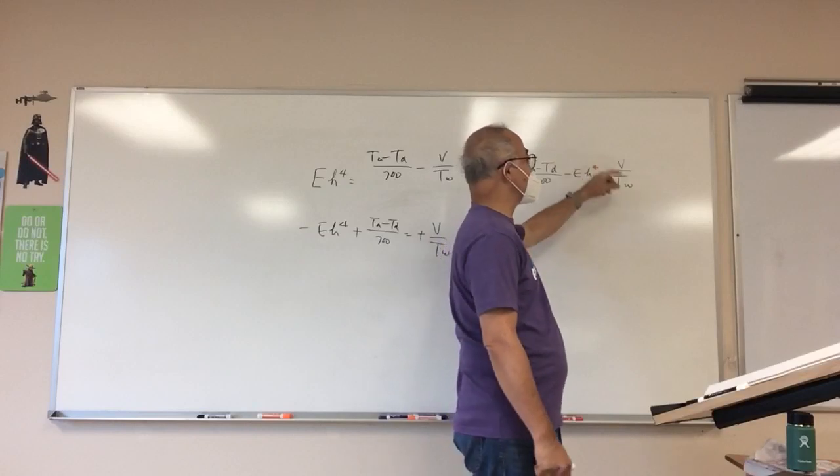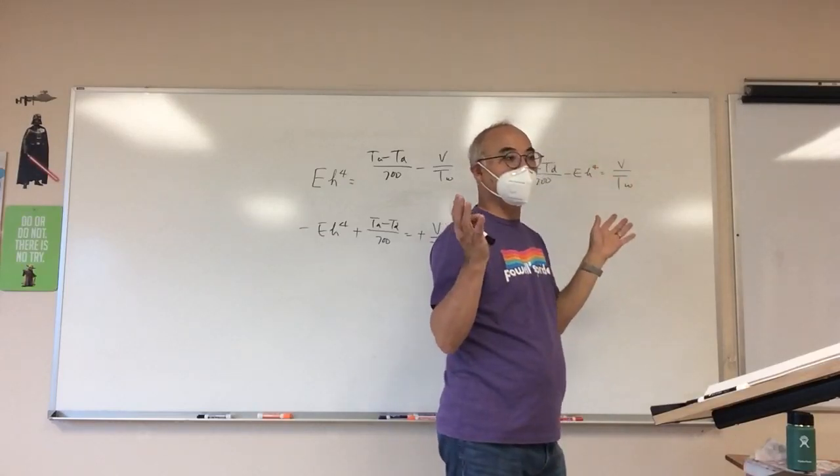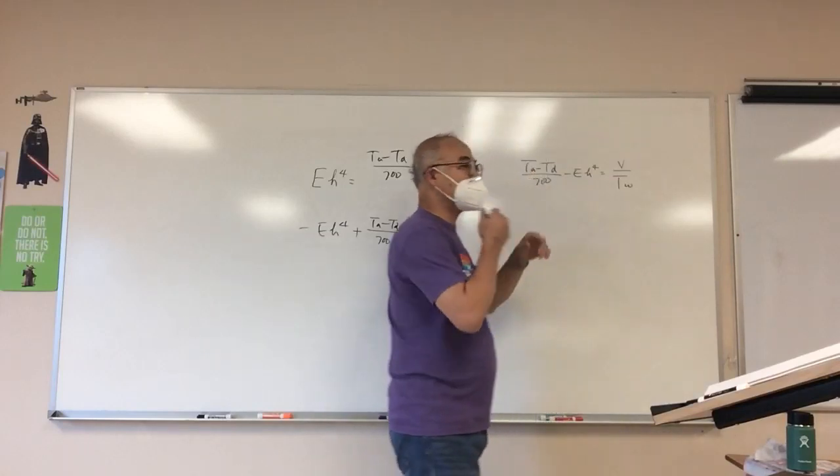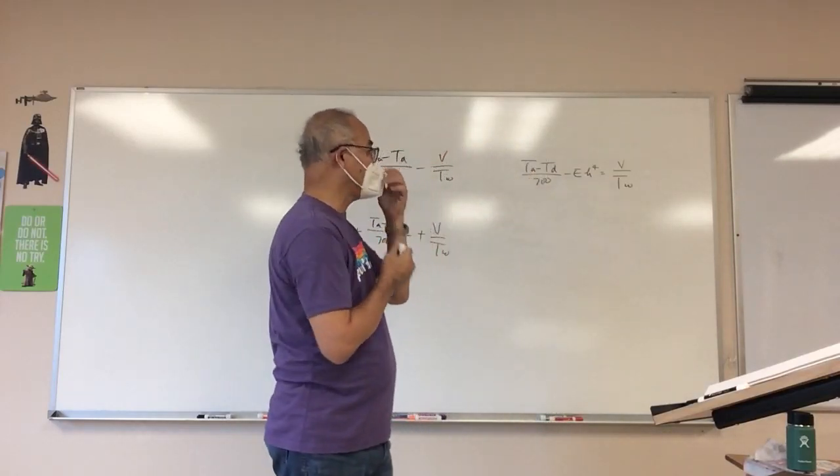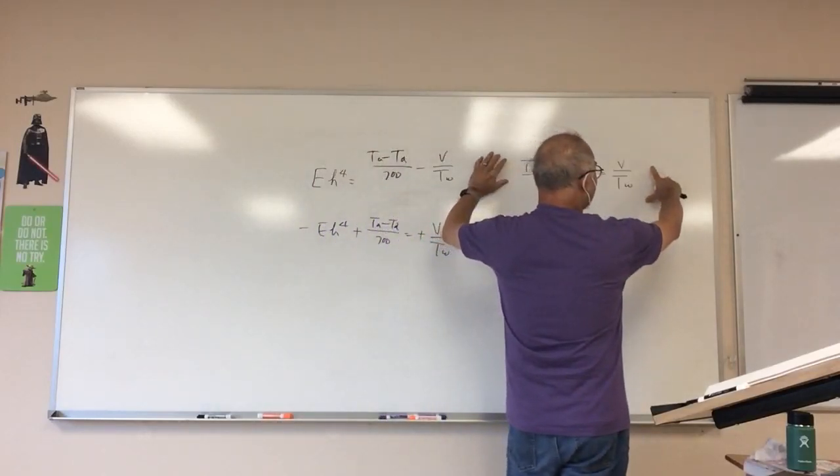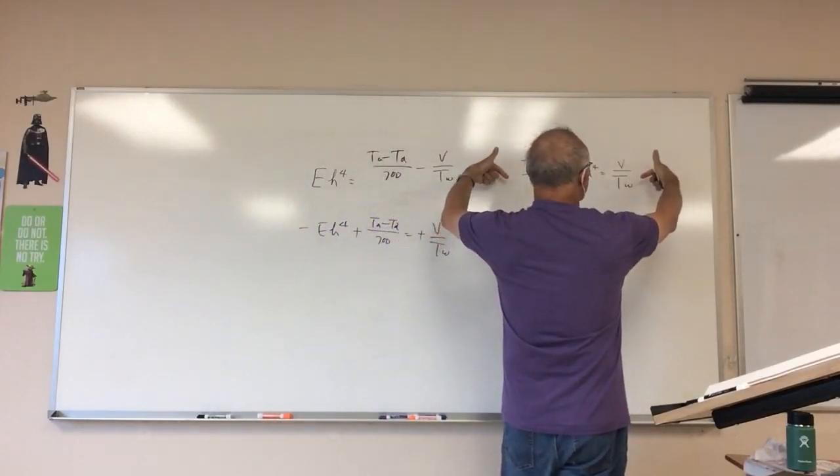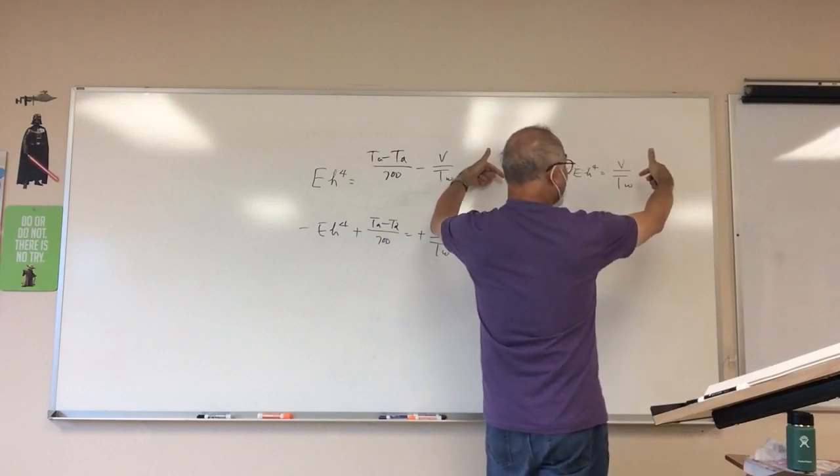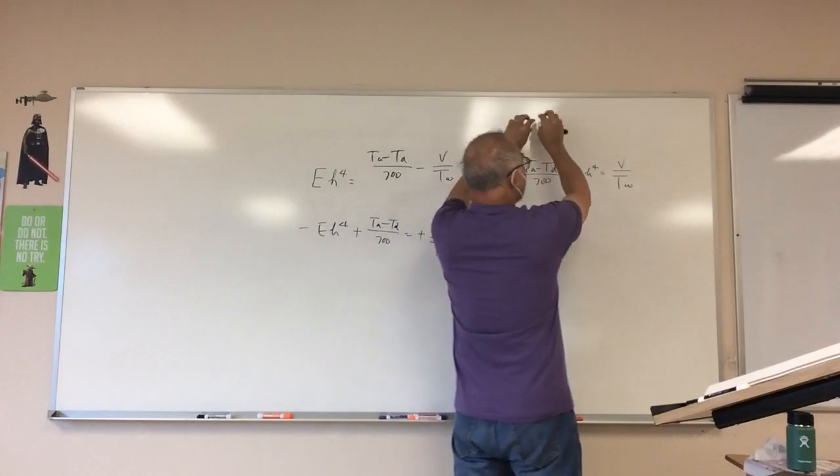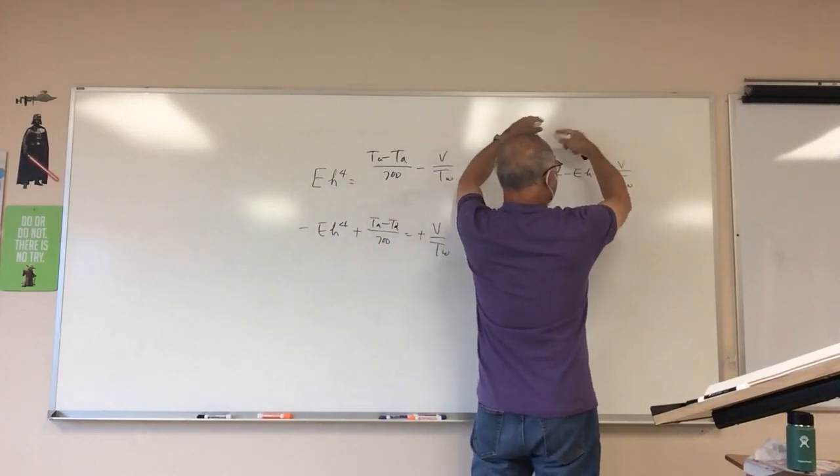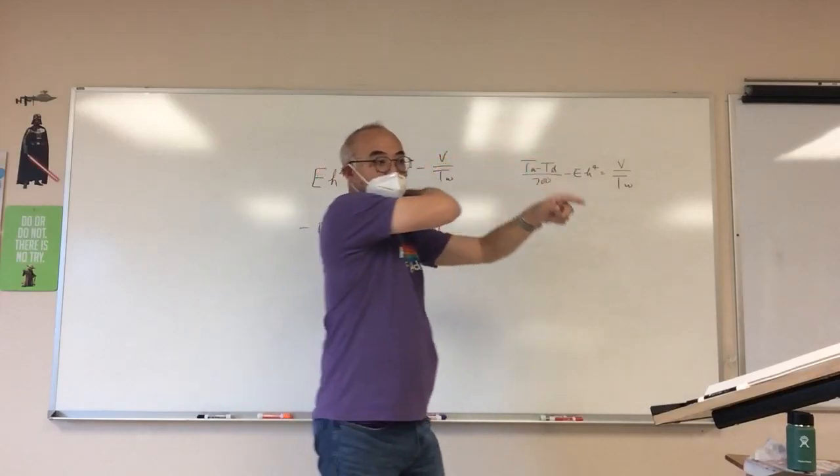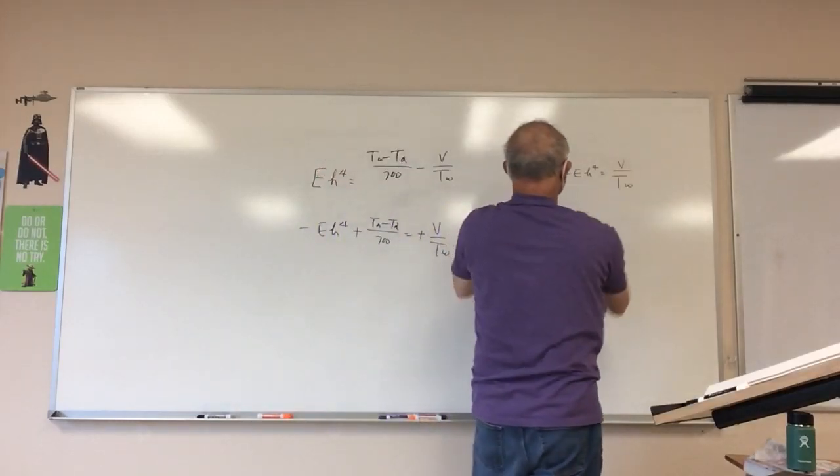Wouldn't it be nice if this was in the numerator? If it was in the numerator, I just multiply the V over and I'm good to go. The problem is it's in the denominator. So the trick is this: I can take the reciprocal of both sides. Because if I had 2 is equal to 2, the reciprocal would be 1 half is equal to 1 half. It should work. So I'm going to go ahead and take the reciprocal of both sides.